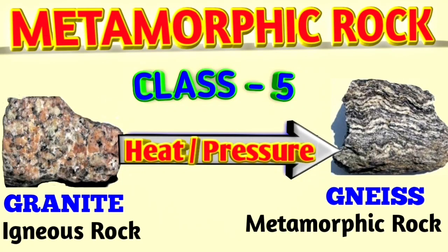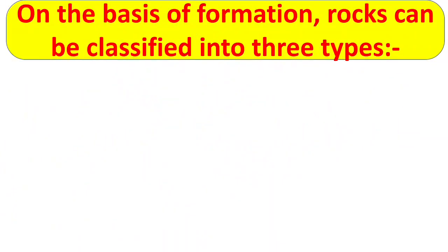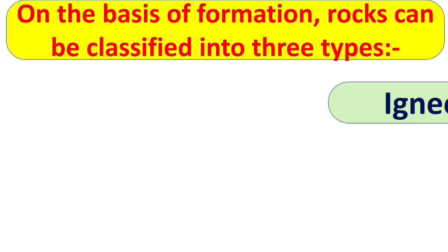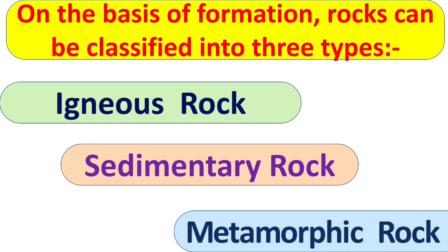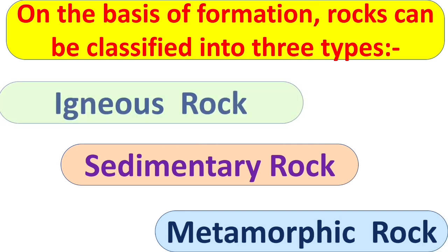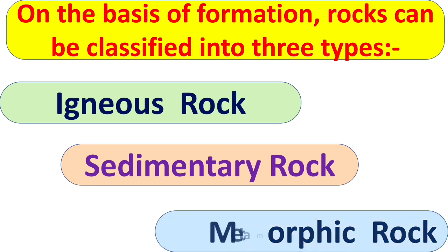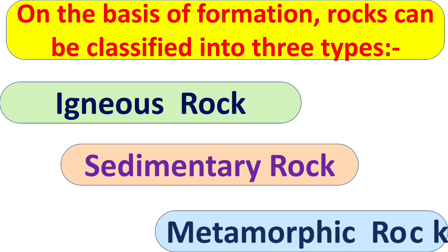Hello everyone and welcome to Aditya Kids Education. Children, you all know that on the basis of formation, rocks can be classified into three types: igneous rock, sedimentary rock, and metamorphic rock. We have already learned about igneous rock and sedimentary rock, and today we are going to learn about metamorphic rock. So let's start.